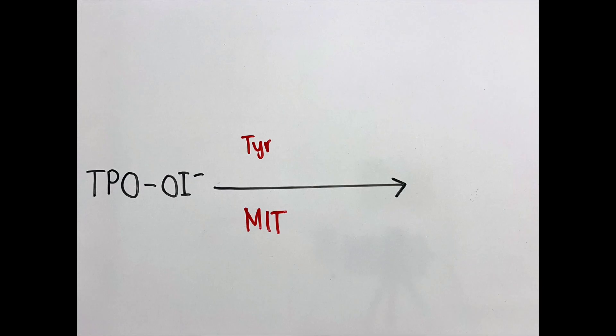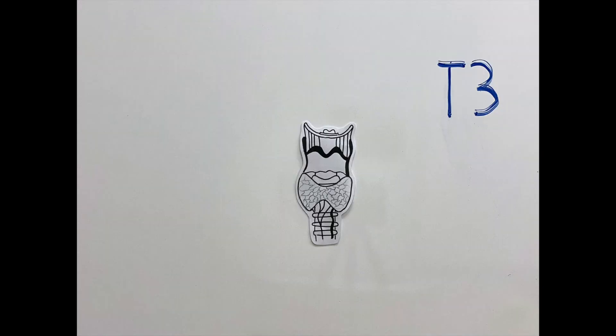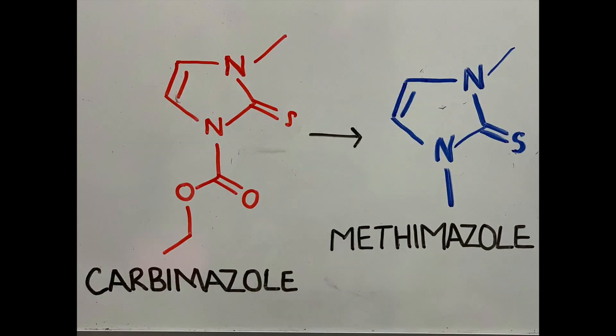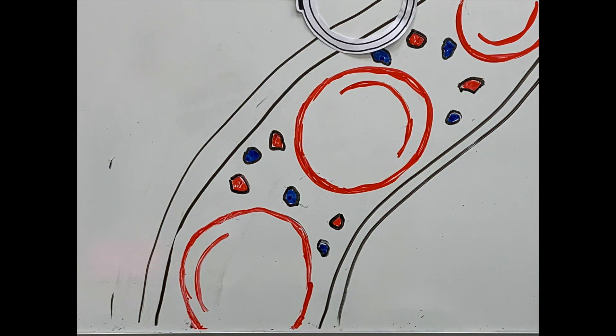Without this coupling, MIT and DIT formation cannot occur, and subsequently T3 and T4 hormones cannot be formed. The active drug methimazole acts as the preferential substrate for TPO, which results in it being iodinated instead of the thyroglobulin tyrosine residue.